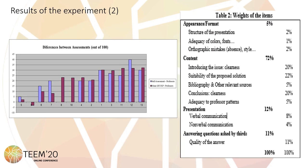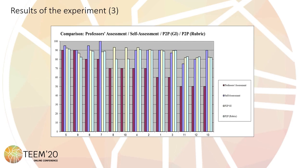In this slide, the different elements assessed by peers are displayed, showing the different weights of each one of the items. The percentages shown here were not given to the students. This slide shows a comparison of the different grades: professors, self-assessment, peer-to-peer considering overall assessment, and peer-to-peer applying the different weights displayed in the previous slides.